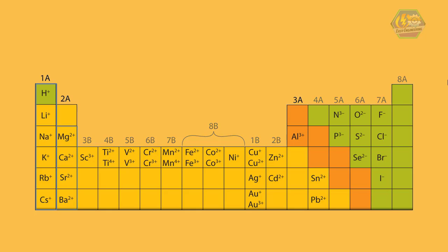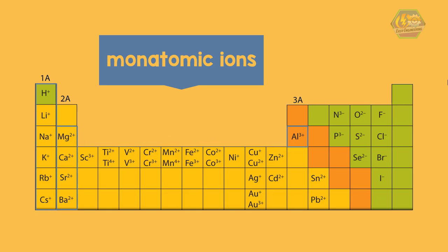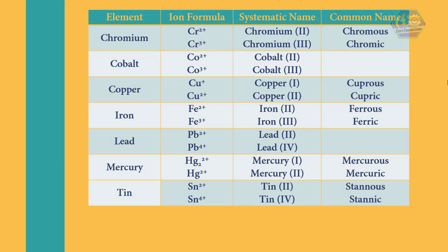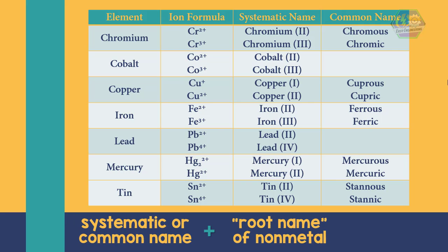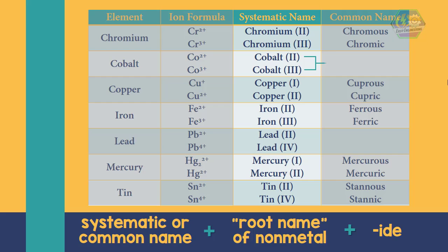Metals in Groups 1A, 2A, and 3A are known as monatomic ions, meaning they consist of only one atom. The remaining metals are known to form more than one monatomic ion. Here is a table showing metals with their systematic name and common name. When naming these compounds, use either the systematic or common name of the metal, plus the root name of the non-metal ending in -ide. The charge of the metal is indicated in parentheses as a Roman numeral, making formula writing easier since the cation charge is given.